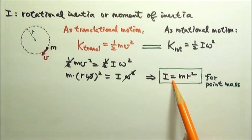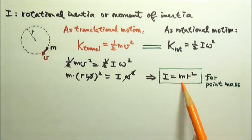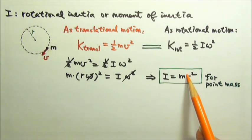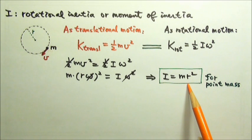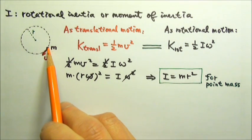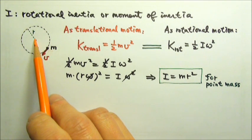So we can see that the rotational inertia not only depends on the mass of the object, but it also depends on the location of the mass. Specifically, it depends on how far away the mass is from the axis of rotation.